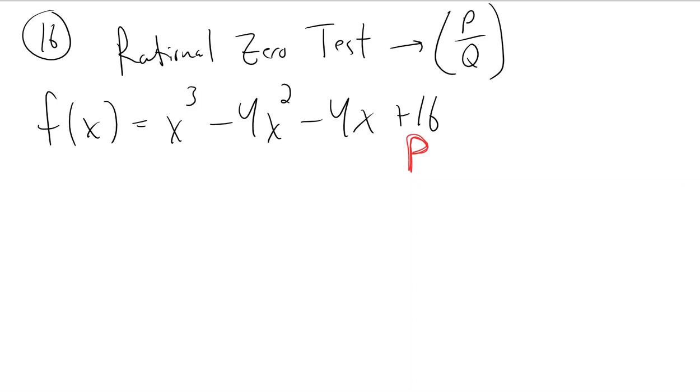So the number that's being multiplied by x with the biggest exponent. And what the Rational Zero Test says is that you should make a list of numbers. This is also very common on the ACT, or at least used to be.